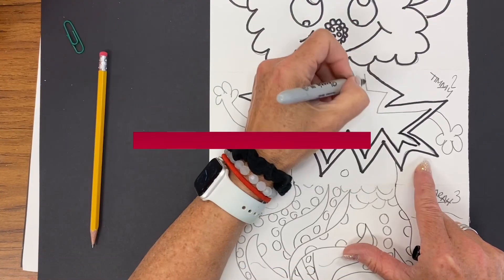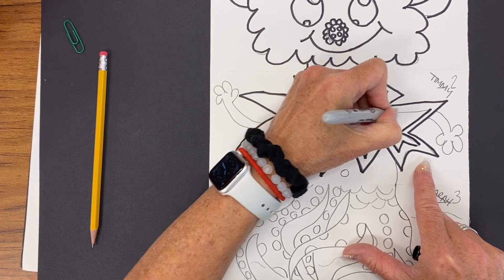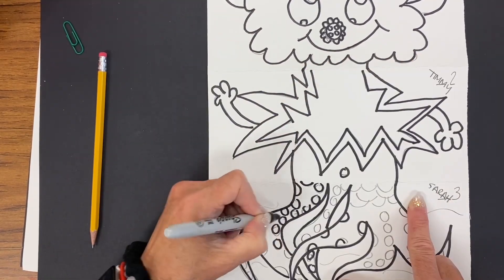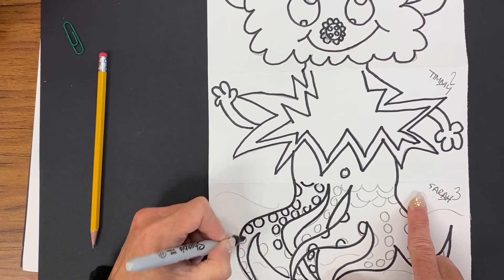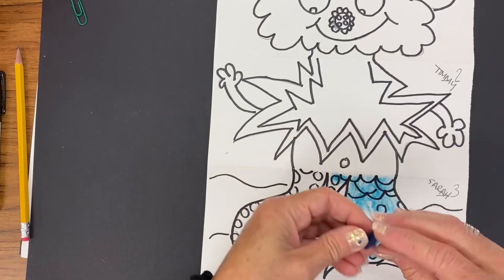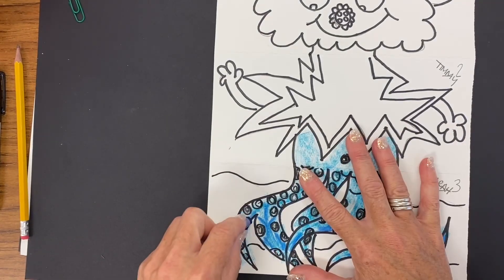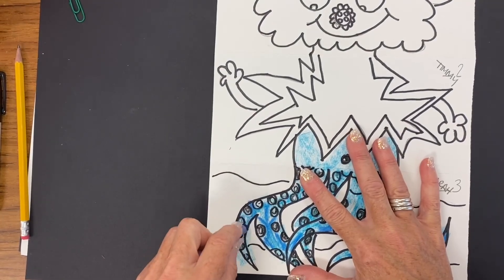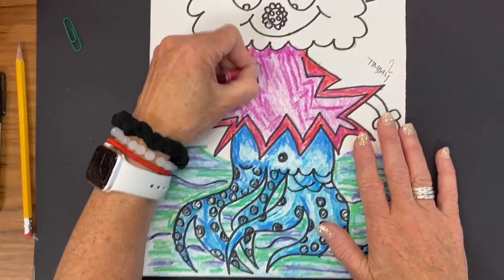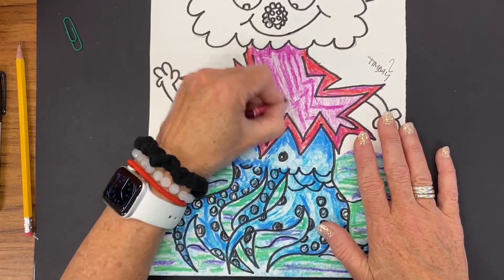But before we do that, let's trace all of our line work with our sharpie. Let's break out the old crayons and add a variety of color. Try to use more than one color in each section. It really makes it pop.